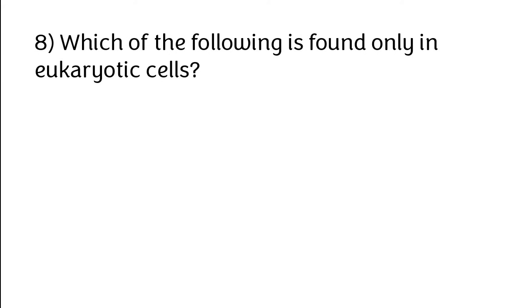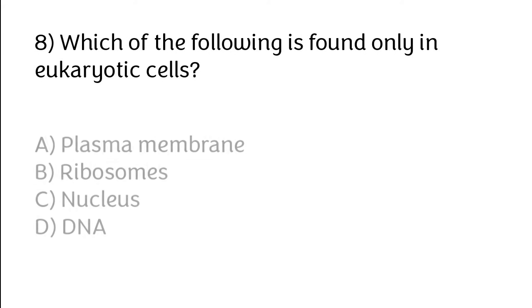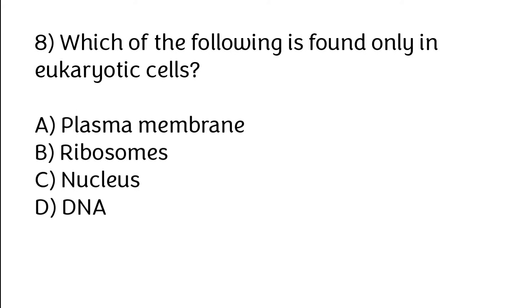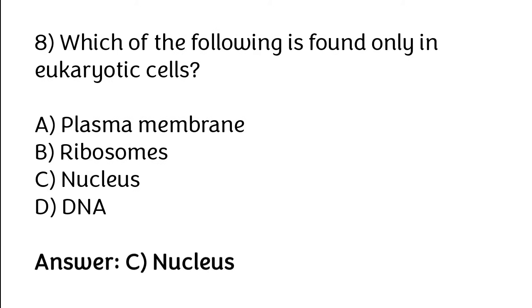Which of the following is found only in eukaryotic cells? Options: plasma membrane, ribosomes, nucleus, DNA. The correct answer is option C — the nucleus is found only in eukaryotic cells.